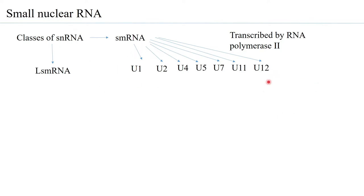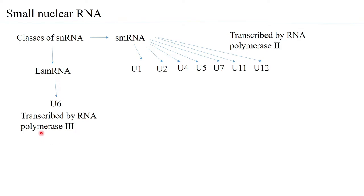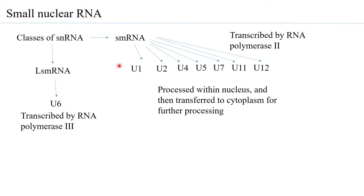This entire set of Sm small nuclear RNA is transcribed by RNA polymerase 2. Under the class of LSM RNA falls U6 or U6ATAC, and also U4ATAC which falls under Sm small nuclear RNA. This class of snRNA is transcribed by RNA polymerase 3. All small nuclear RNAs are processed within the nucleus then transferred to the cytoplasm for further processing, after which they return to the nucleus. In the case of U6 and U6ATAC, they never leave the nucleus.